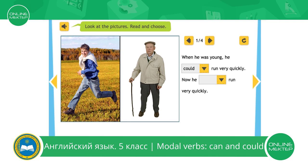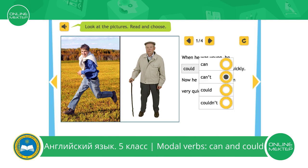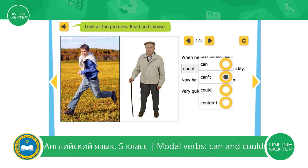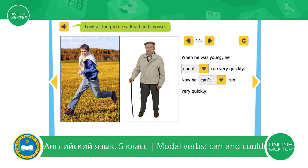Look at the second picture. Now he can, can't, could, couldn't. Now he can't run very quickly. Let's repeat. When he was young, he could run very quickly. Now he can't run very quickly.